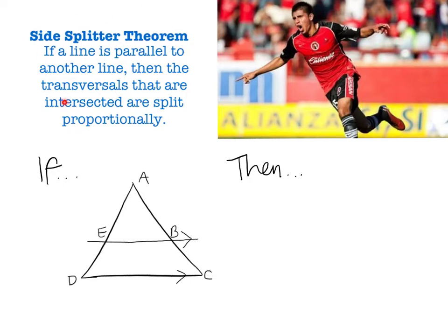Now we're going to go ahead and write the theorem, and then I'm going to translate it into a diagram to make a little bit more sense. Here's how it goes. If a line is parallel to another line, then the transversals that are intersected, this transversal and this transversal, they are split proportionally. Now once you've copied that down, I want to highlight a few things. They are split proportionally. And what's split proportionally? The transversals are.